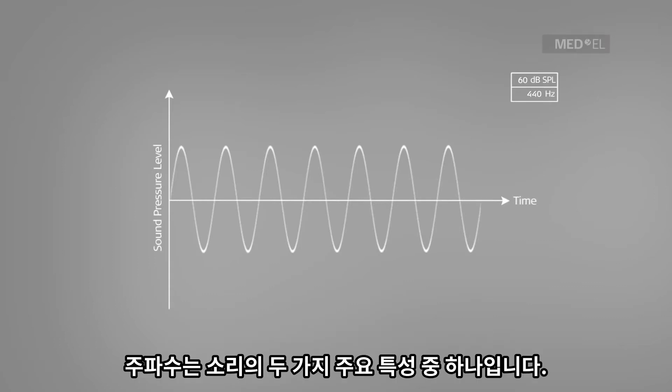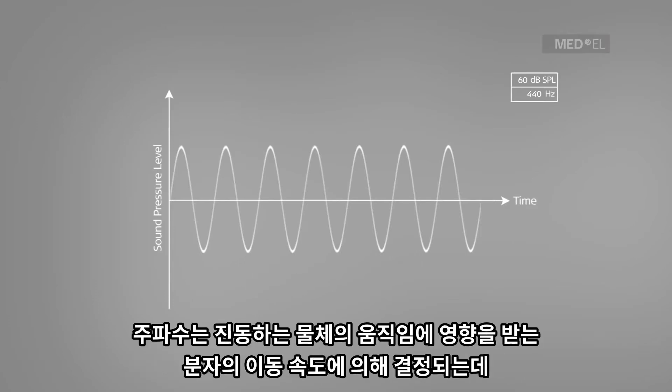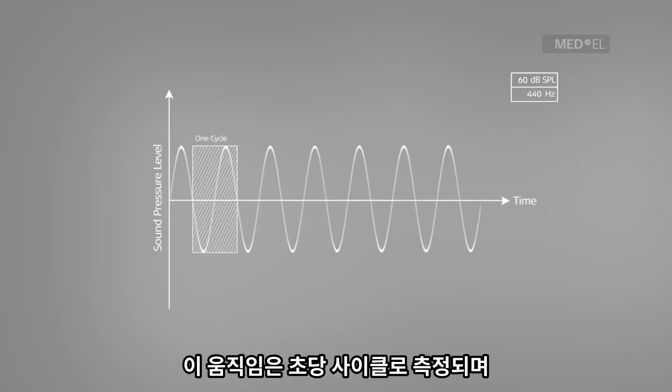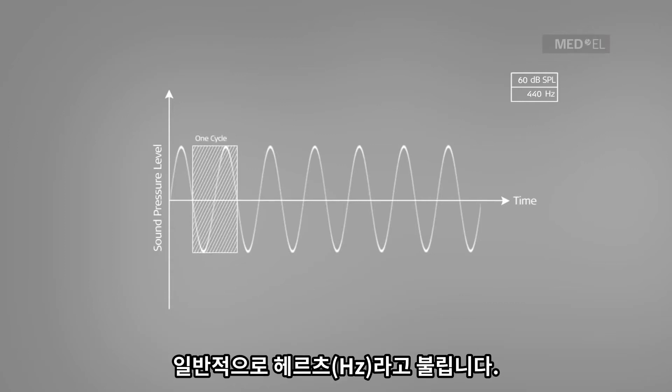Frequency is one of two key properties of sound. Frequency is determined by the rate of movement of molecules set into motion by a vibrating object. This movement is measured in cycles per second, commonly referred to as hertz.